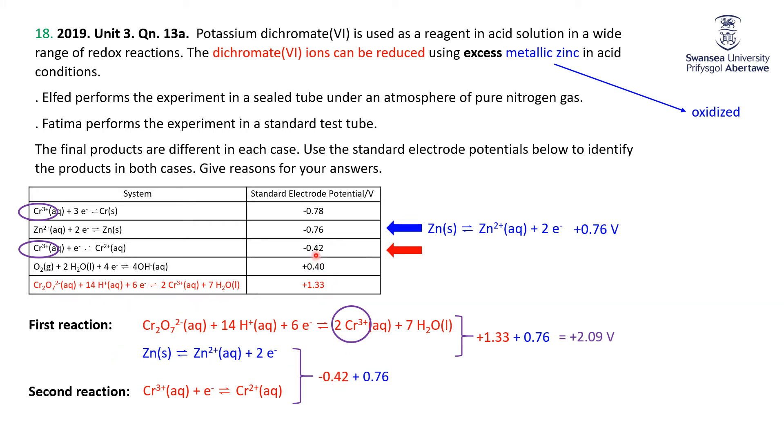Put those two numbers together, the minus 0.42 for the reduction potential, but the plus 0.76 for the oxidation, and we get plus 0.34 volts. So when we do this all together, taking the dichromate with zinc makes Cr3+, but the excess zinc takes the Cr3+ to Cr2+. So both of these students are going to make Cr2+.